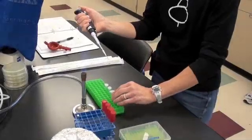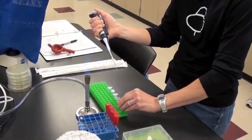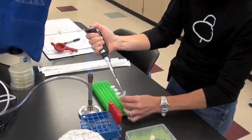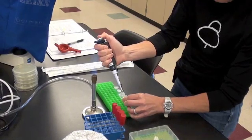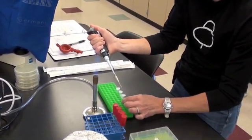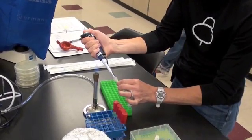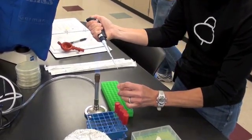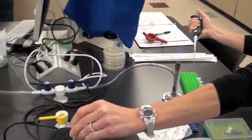The microcentrifuge tube the student just finished with is her 10 to the 0 phage solution. Now she's going to dilute that. She'll remove 10 microliters from her 10 to the 0 solution and place that 10 microliters in 90 microliters of phage buffer. This becomes a 10 to the minus 1 dilution.